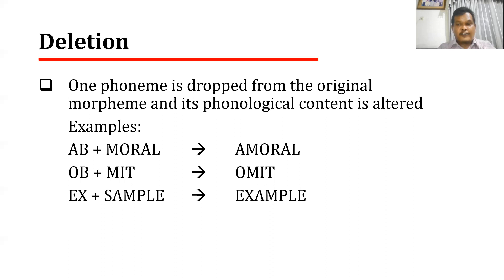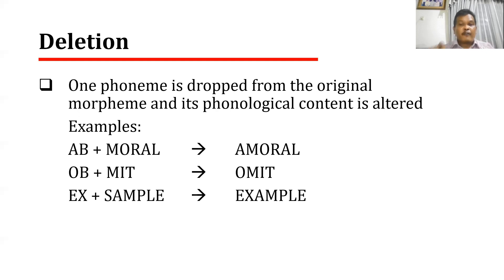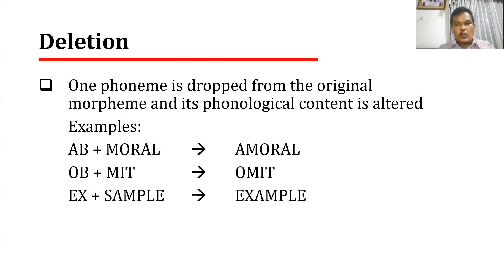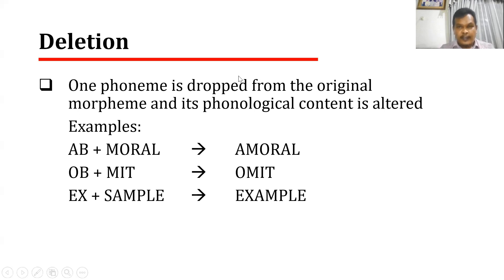That's all about morphological processes. Remember that morphological processes work at the lexical level, meaning that we create a new lexicon. Morphological processes are divided into two: assimilation and deletion. Assimilation is related to substitution, while deletion is related to elimination. I hope you can understand this explanation and read some more references for further understanding of morphological processes. Thank you and goodbye.